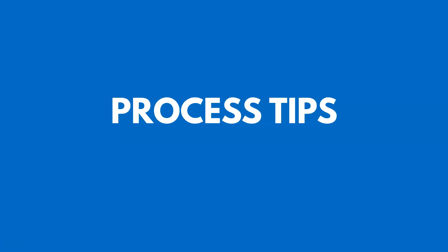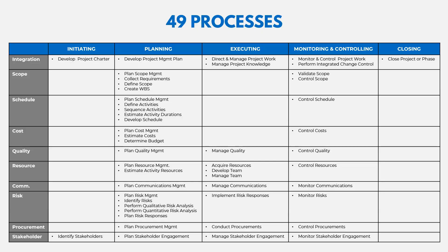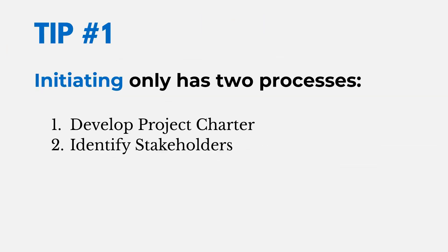Now let's talk about some tips for remembering the processes and which process groups they belong to. We have 49 processes categorized by process group and knowledge area. The first tip is that initiating only has two processes: develop project charter and identify stakeholders.